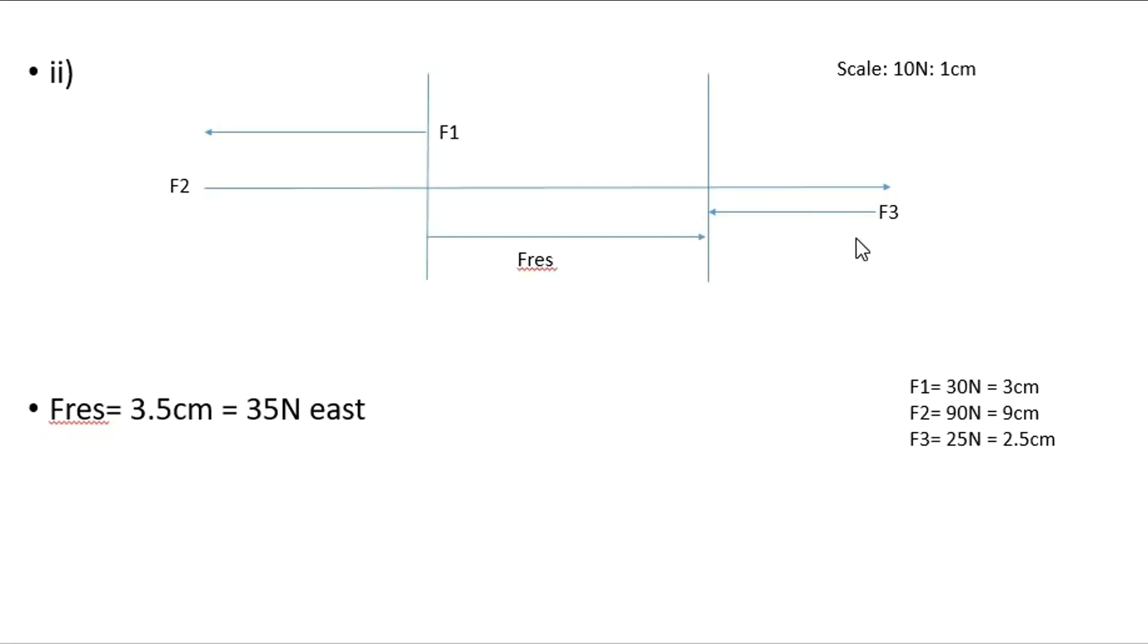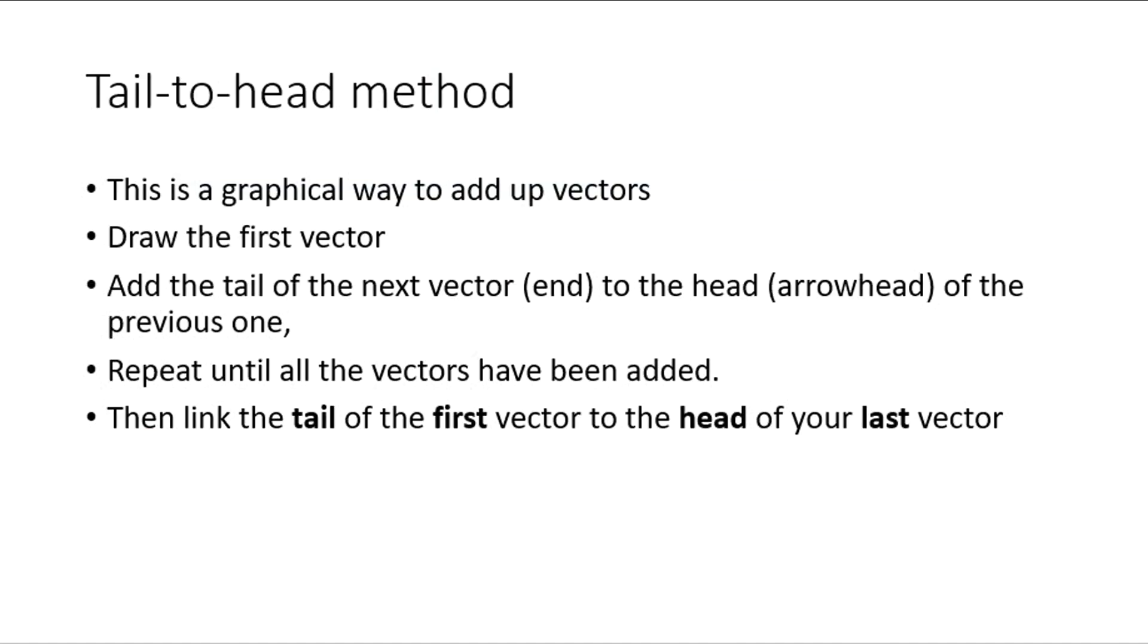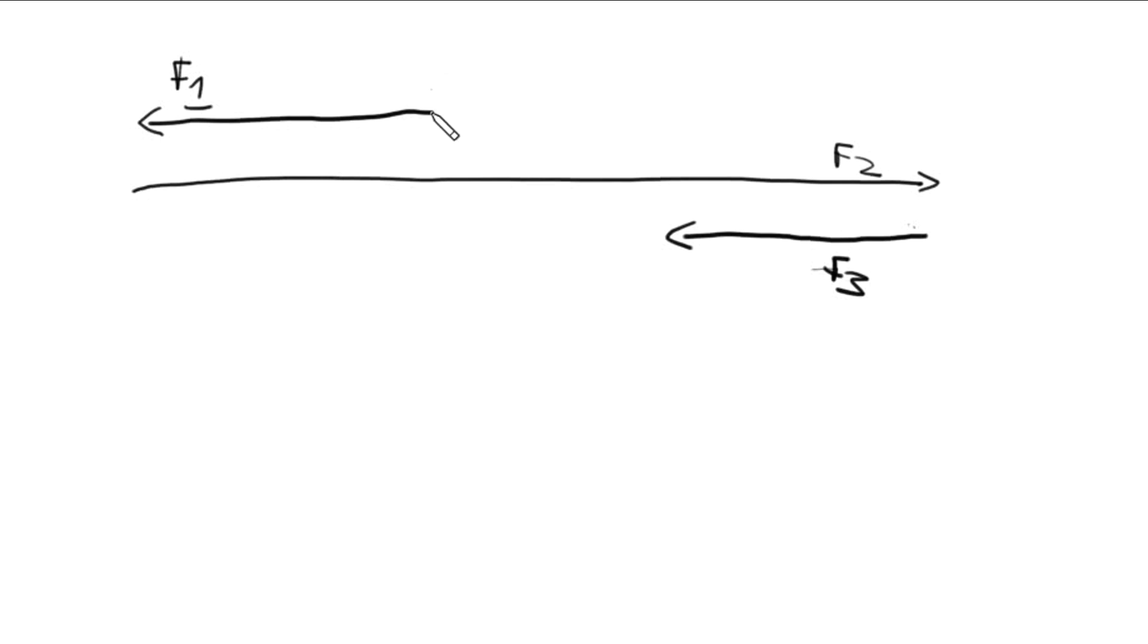Now we do the linking. Link, as in the notes, the tail of the first vector to the head of the last vector. The tail of the first vector is over here, so let's link it up. Let's try that again and get a straight line going here as best as we can. Third time's the charm. That's a little bit better, to the head of your last.